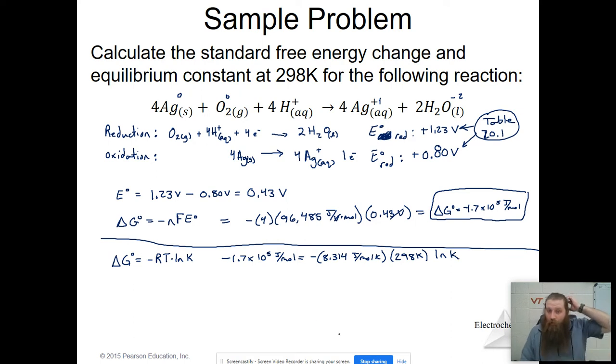So I'm going to divide by negative 8.314 times 298 K to give me the natural log of K. And that's going to tell me that 69 equals the natural log of K. And then I'm going to solve that and find that K is equal to 9 times 10 to the 29th. And that makes sense. I should have a really large K there. So that's how I might do a problem that asked me to find standard free energy change, delta G prime, and equilibrium constant K.